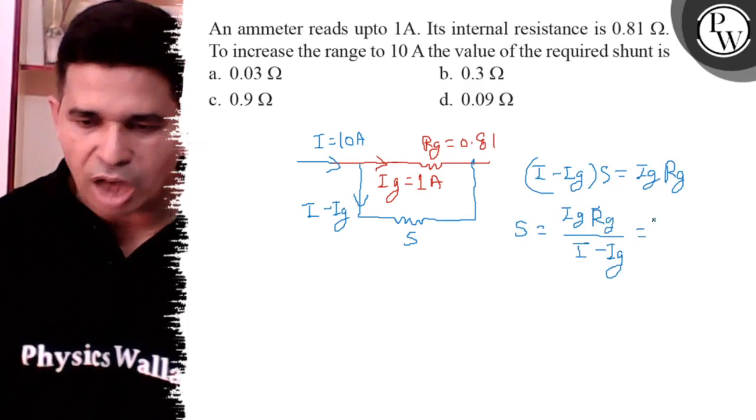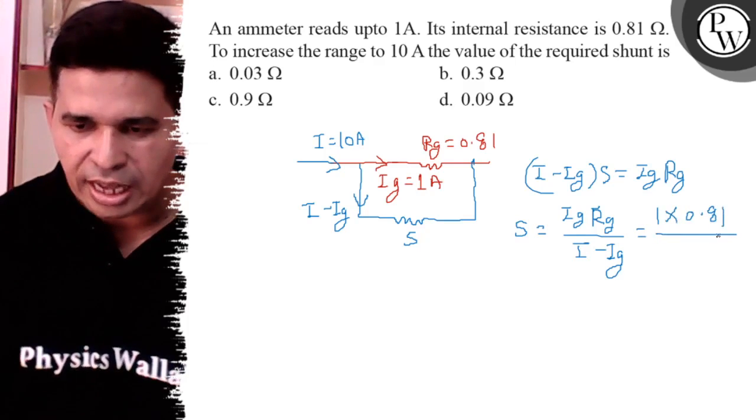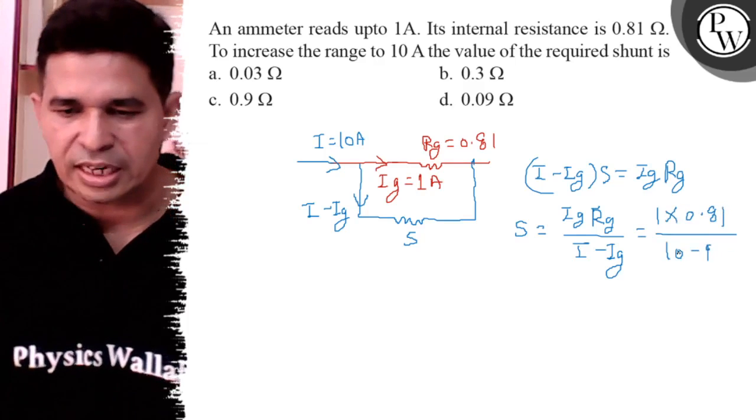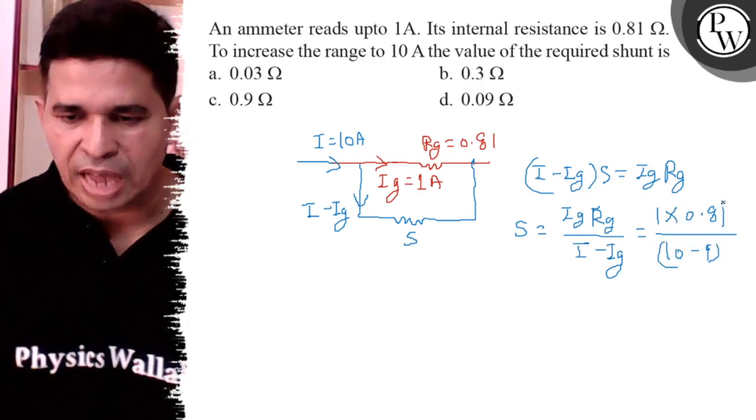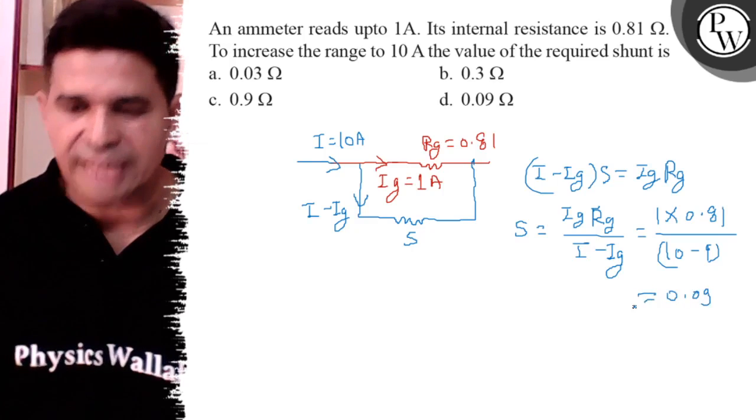Put the values: IG is 1 ampere, it is 0.81, and it is 10 minus 1. So it is 9. 1 times 0.81 divided by 9 gives 0.09.